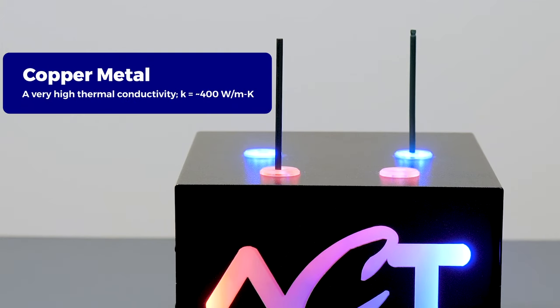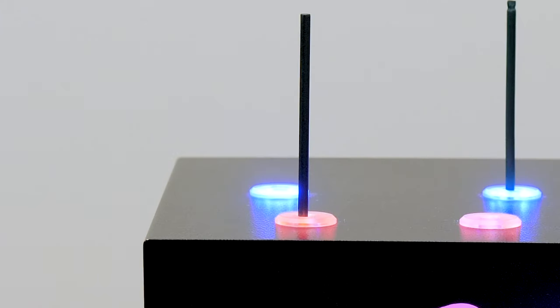Copper is known as a very strong thermal conductor. It has a thermal conductivity of roughly 400 watts per meter K. As it transfers heat, you can see the color change from the base of the copper rod upward.